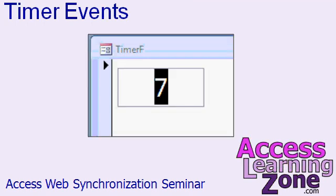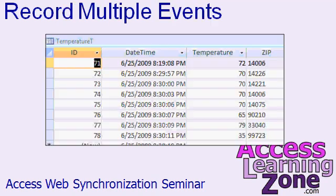I'll show you how to program a timer event so that we can launch an event every, let's say, 10 seconds. We'll create a table that will store a list of zip codes, and then our event timer will run down that list of zip codes every 10 seconds and gather up the temperature data from the websites automatically. That's how we can run multiple events in our web forms.